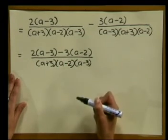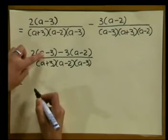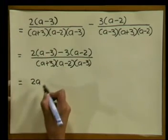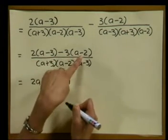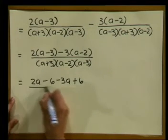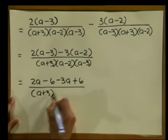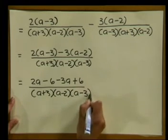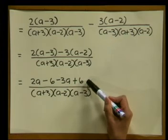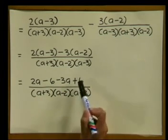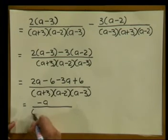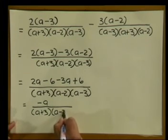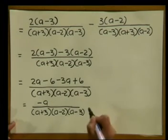Now we can simplify our numerator, but watch out for the minus sign. When we multiply it out: 2 multiplied by a gives us 2a; 2 multiplied by minus 3 gives us minus 6; minus 3 multiplied by a gives us minus 3a; and minus 3 multiplied by minus 2 gives us positive 6. This is all divided by our denominator a plus 3 multiplied by a minus 2 multiplied by a minus 3. Now the numerator can be simplified further — we can add our like terms. Minus 6 plus 6 cancels out to give us 0, but 2a minus 3a gives us minus a. That's all divided by a plus 3 multiplied by a minus 2 multiplied by a minus 3. And that is our final answer.